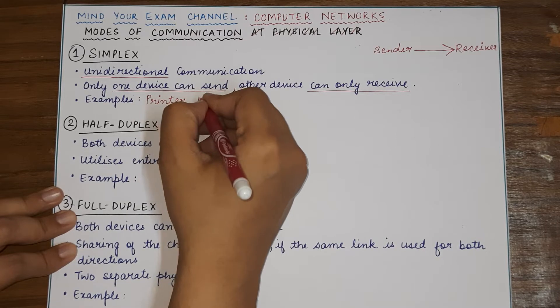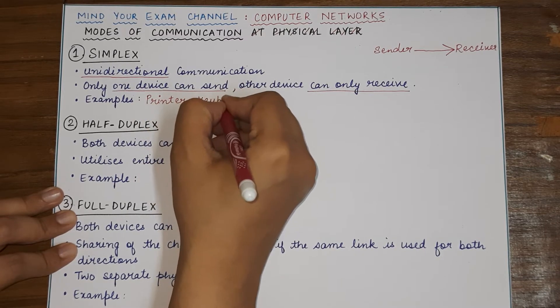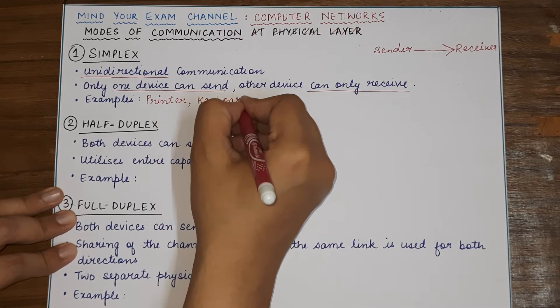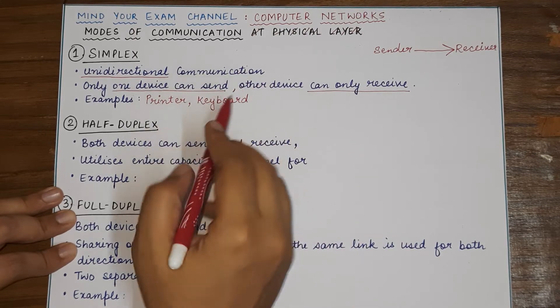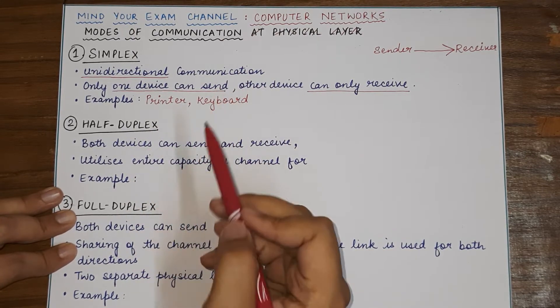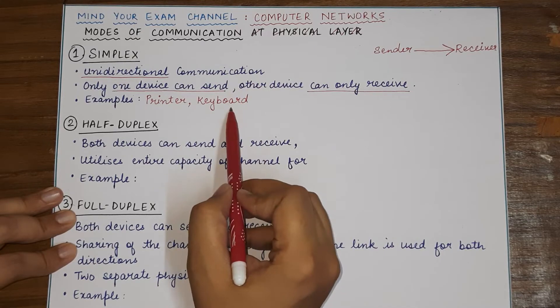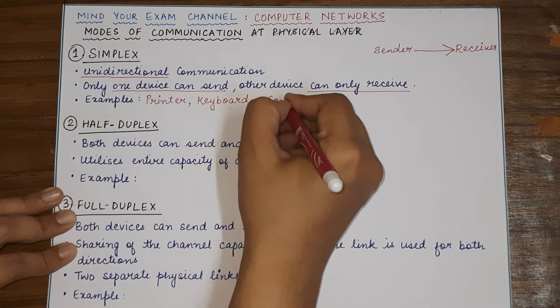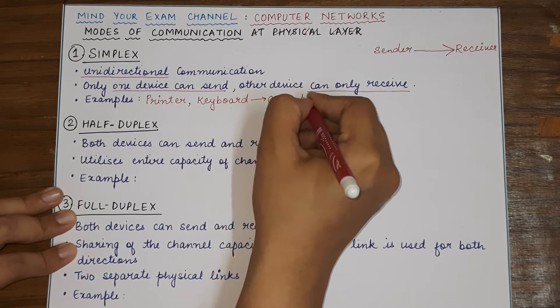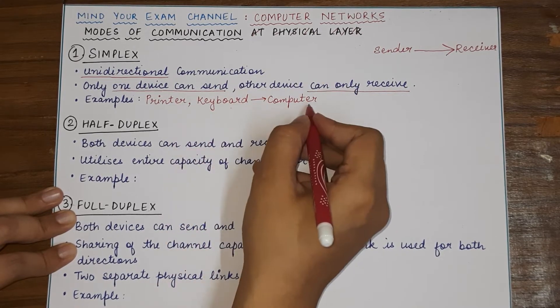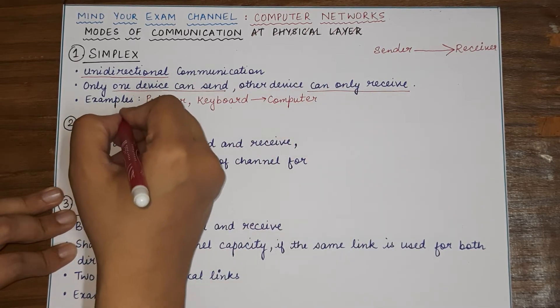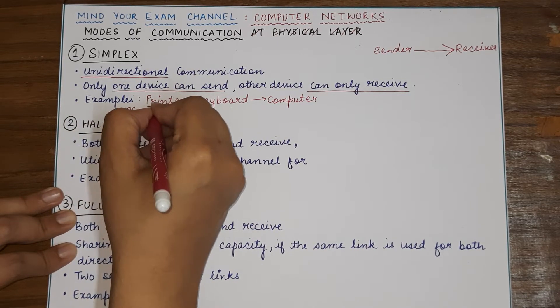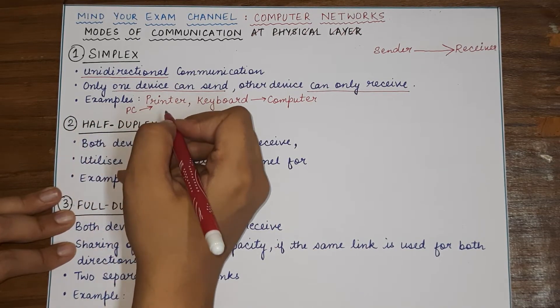Similarly, if you are typing something, then you can only send data or you can only press keys on the keyboard to send information from the keyboard to the computer. So, the direction will always be entering of information from the keyboard to the computer. Whereas, in this case, the direction is commands of printing will be sent from the PC to the printer.